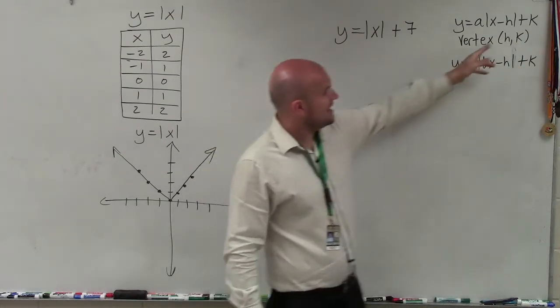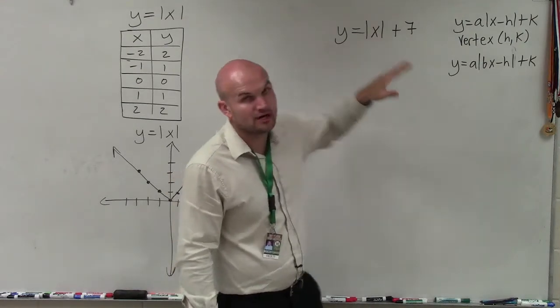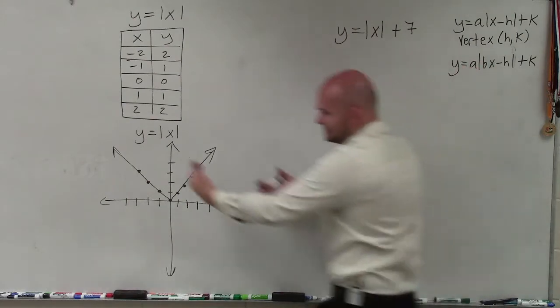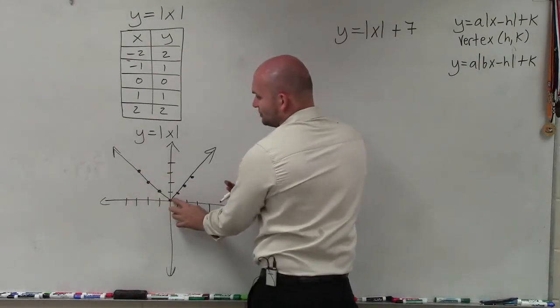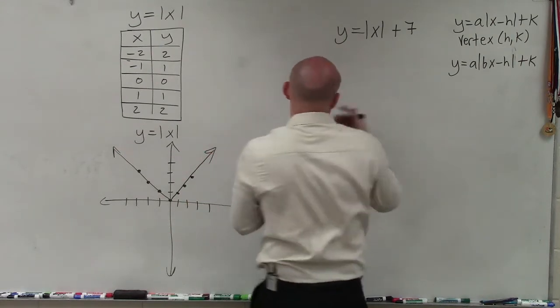And notice that the h is going to shift the graph left to right, but we don't have any h inside here. We have actually our parent graph. So basically, y equals absolute value of x plus 7 is this graph, but with a new vertex of not (0, 0), but (0, 7), meaning my graph is now being shifted up 7 units.